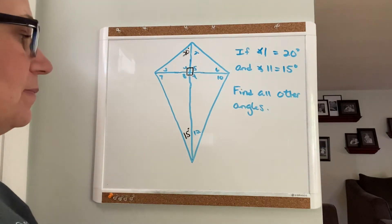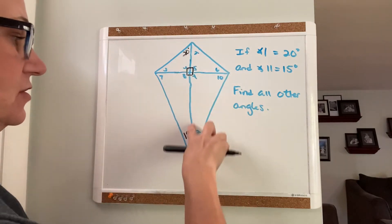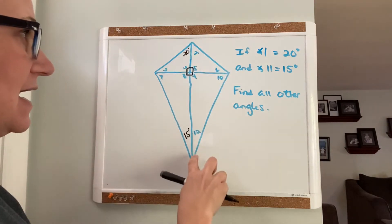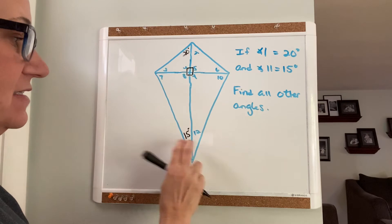That's going to help us get every other angle measure. The other property is that the longer diagonal bisects these two angles.